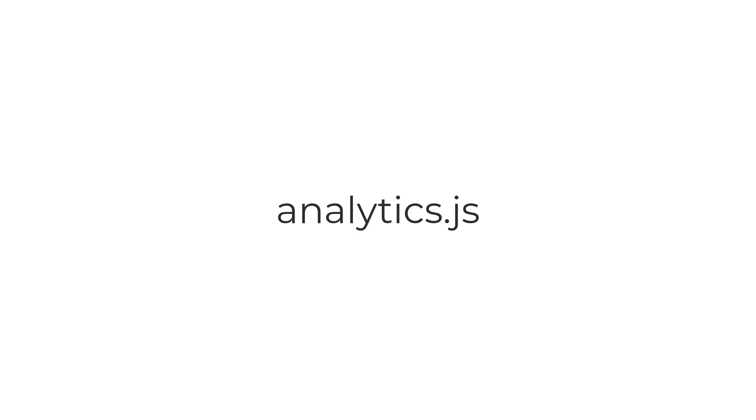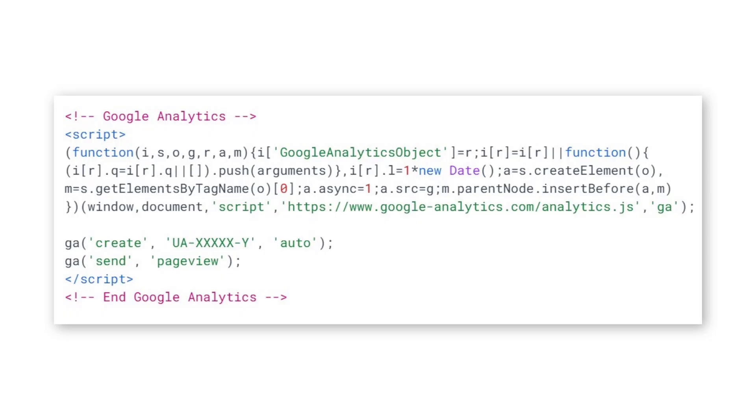Since 2013, Universal Analytics was using a JavaScript library called analytics.js. If you're dealing with an older website, there is a chance that the tracking code on it looks like this, and here you can notice analytics.js.